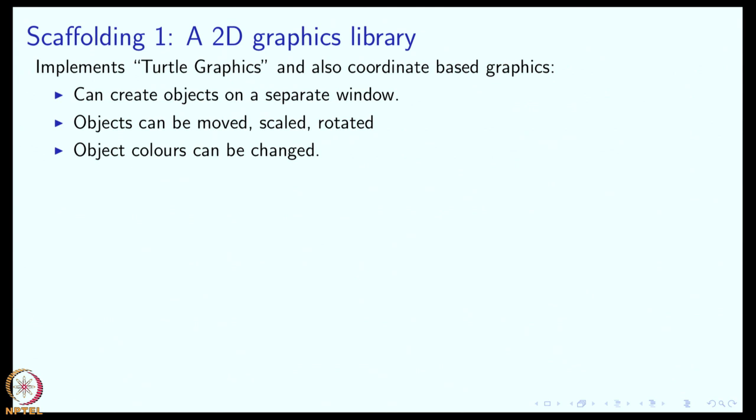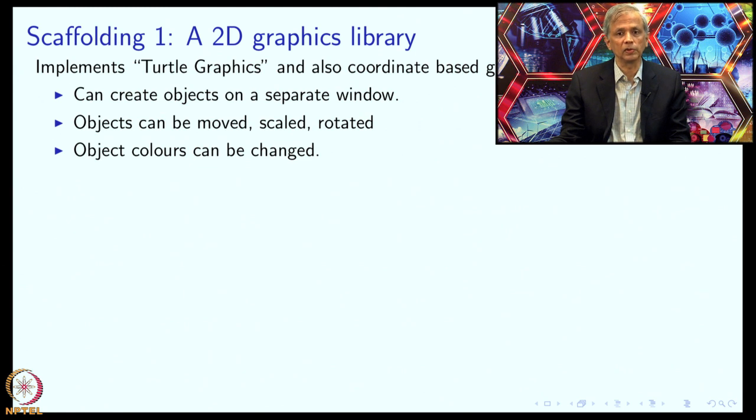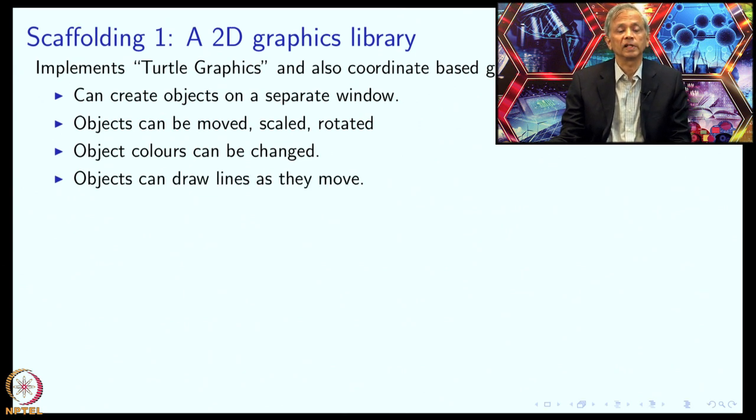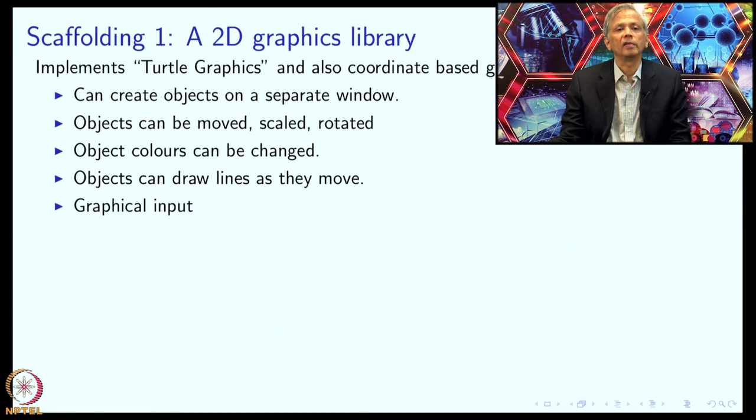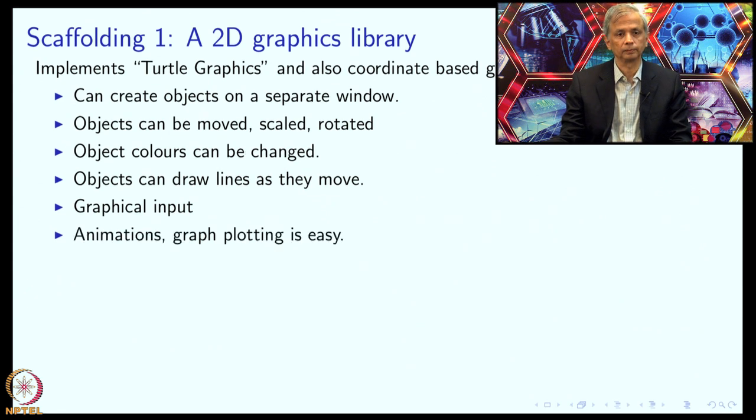The objects are like rectangles, squares, and circles which move on paper. They are not like cubes or anything like that. Objects will draw lines as they move. We are going to see examples of this in a few minutes. We will also have graphical input, so the user will be able to click on our graphics window and our program will be able to respond to this input. This allows us to create animations and do things like graph plotting, which is very commonly done in science and technology subjects.